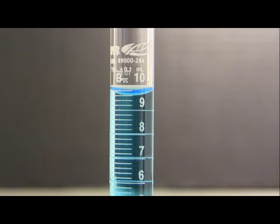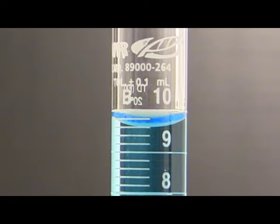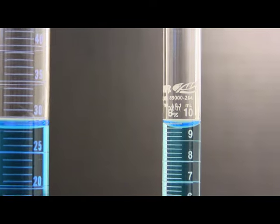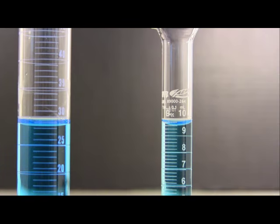In this video we will learn how to read a meniscus. A meniscus occurs when the molecules of a liquid cling to the side of the glassware you are measuring with. The meniscus is more prominent in glassware with a small radius.